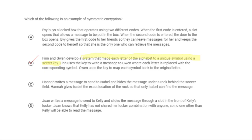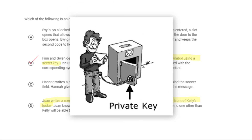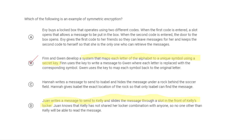There are more secure methods of symmetric encryption than the Caesar cipher. Notice answer D here: Juan writes a message to Kelly and slides it through a slot in her locker, knowing Kelly hasn't shared her locker combination with anyone. This is actually exactly what we described regarding asymmetric encryption — public key encryption — so it's not an example of symmetric encryption; it's a really good example of asymmetric encryption. Answer C is interesting but isn't actually a form of encryption, since anyone could read that message.